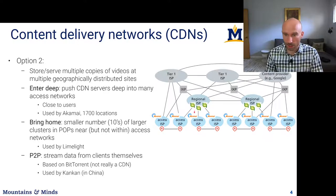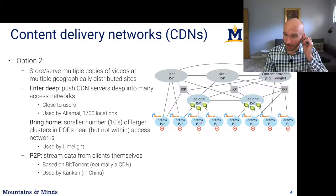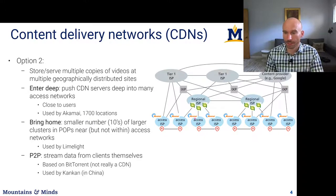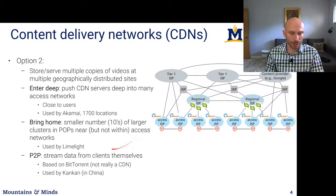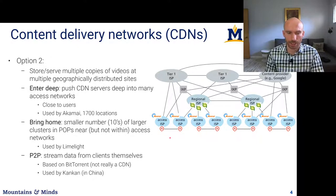Performance depends on how much overlap exists in what clients request. If there's a lot of overlap, Enter Deep works well. If clients request very different content, the Bring Home approach works much better. There is also an alternative strategy based on peer-to-peer, where caches are deployed on user devices and data is exchanged through a peer-to-peer system — for example, BitTorrent.